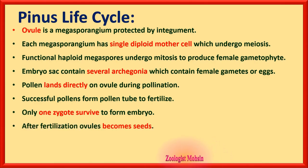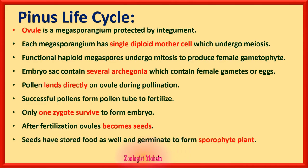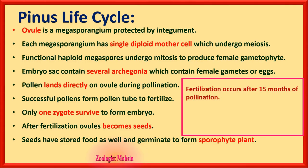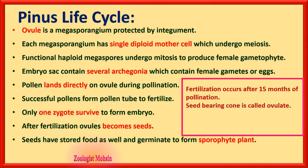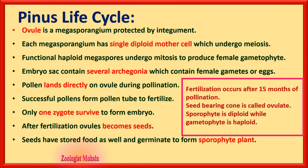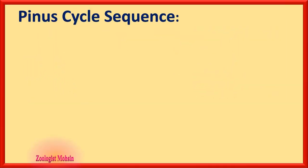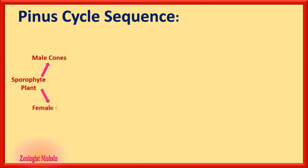Successful pollen forms a pollen tube to fertilize the egg; only one zygote survives to form the embryo, and any other zygotes present are eliminated. After fertilization, ovules become seeds — seeds have stored food and germinate to form the sporophyte plant. Fertilization occurs after 15 months of pollination in gymnosperms. The seed-bearing cone is called the ovulate cone. Sporophyte is diploid while gametophyte is haploid.